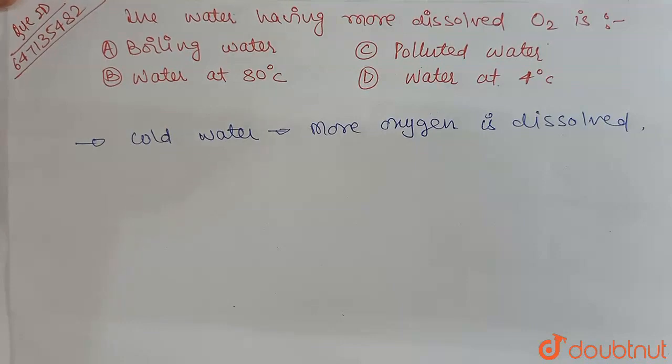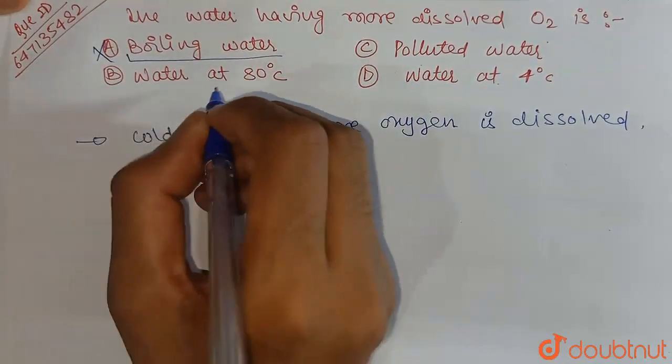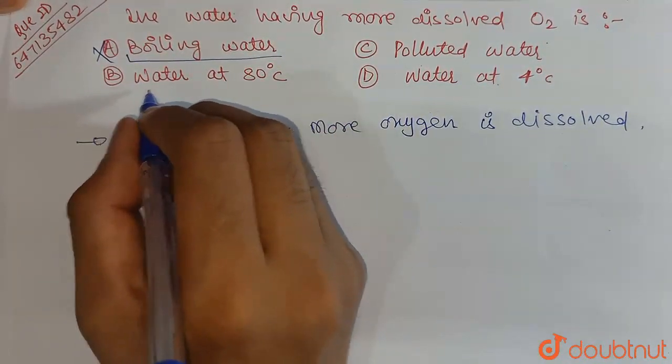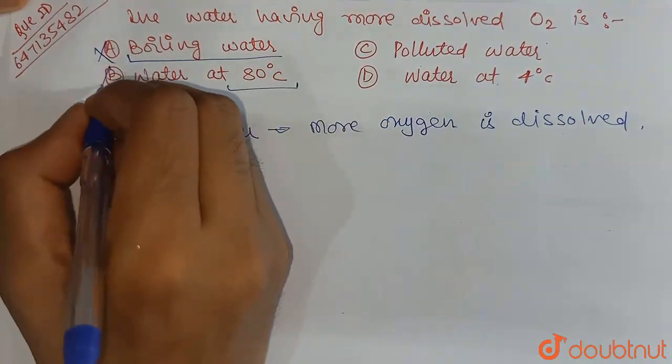And in cold water, oxygen is more dissolved. That means this answer is what will happen. If I talk about boiling water, basically it will not happen. B is water at 80 degrees Celsius. Warm water has more. This is wrong.